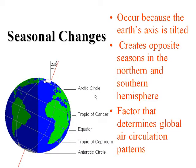Seasonal changes happen primarily because the earth is tilted. The earth is tilted 23 degrees on its axis, which creates opposite seasons in the northern and southern hemispheres, and that determines air circulation patterns.